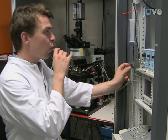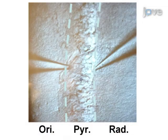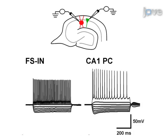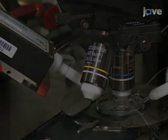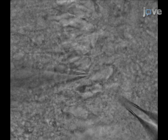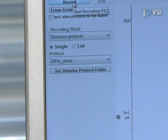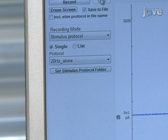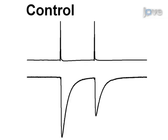To begin paired recordings, first establish a whole cell recording of a presynaptic interneuron as before and confirm the fast spiking phenotype. Next, patch a CA1 pyramidal cell within a 20 to 100 micrometer distance of the interneuron. Holding the presynaptic interneuron in current clamp mode, apply brief supra-threshold depolarizing current pulses to elicit action potentials in the interneuron. If a synaptic connection is present, action potentials in the interneuron result in iPSCs in the voltage-clamped CA1 pyramidal cell.